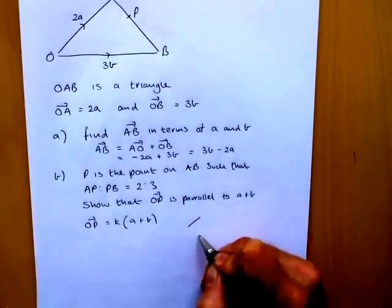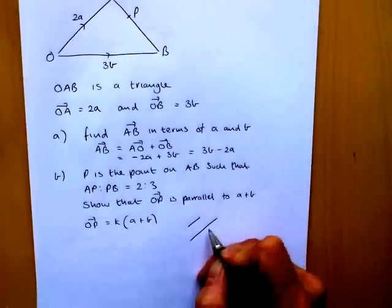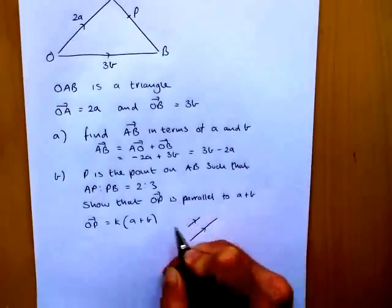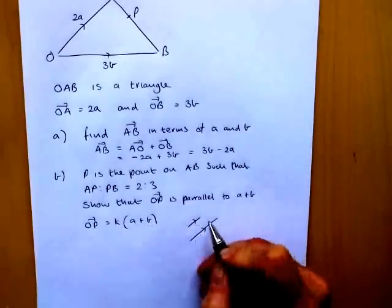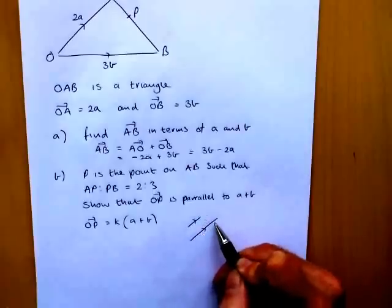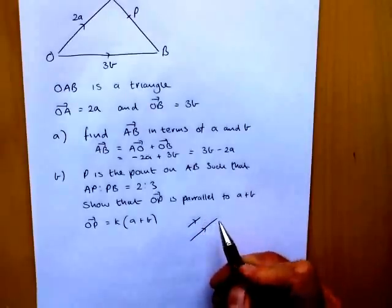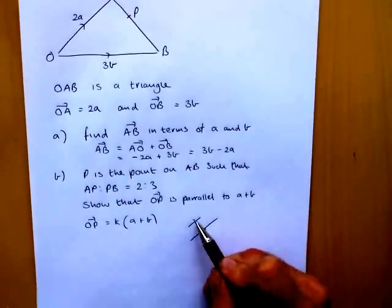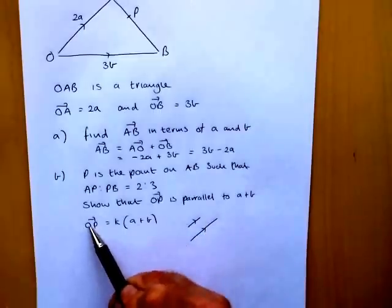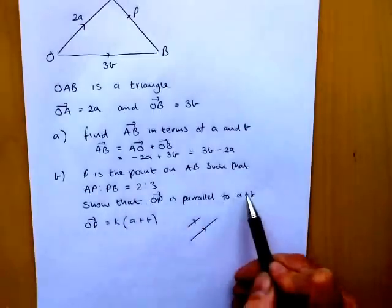That's all you need to do because if it's a multiple of the same vector, so if that's one vector, a multiple of the same vector will be going in the same direction it will just be longer. So the A plus B bit gives you the direction and the K bit just gives you the length. And they're clearly not starting from the same point so they're not collinear. So if we prove this we've shown that they're parallel.